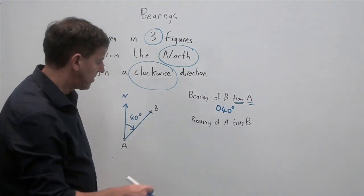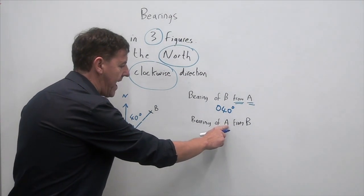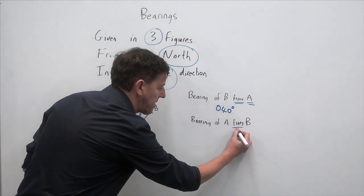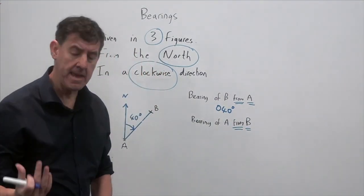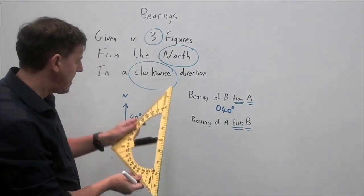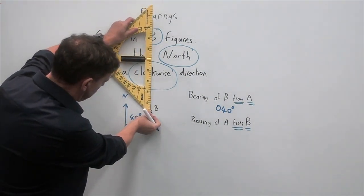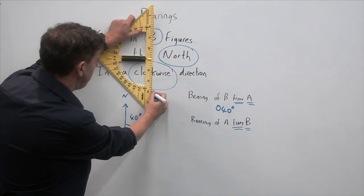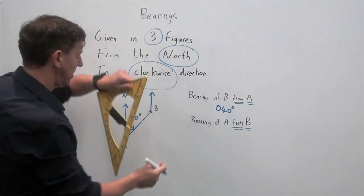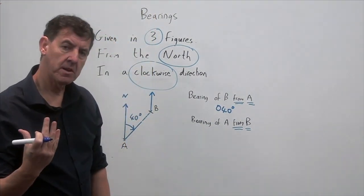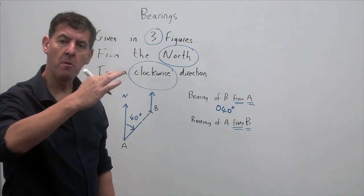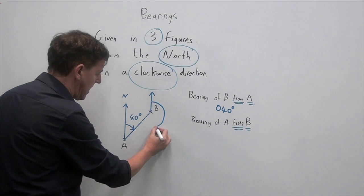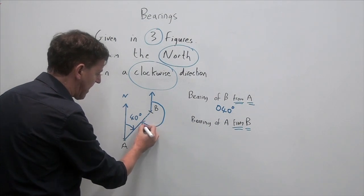If you look at this next question, it says, what is the bearing of A from B? So this time the key word is where am I coming from? I'm coming from B. So what would I need to do on B is literally, I would take my ruler and my first thing I'm going to do is draw myself a north line on B like such. What's my angle going to be? My angle is going to be from the north clockwise. So I have to go all the way around here and measure that angle there.